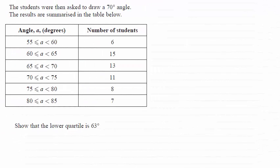Hi there. Now for this next part of the question, we're asked to show that the lower quartile is 63 degrees.